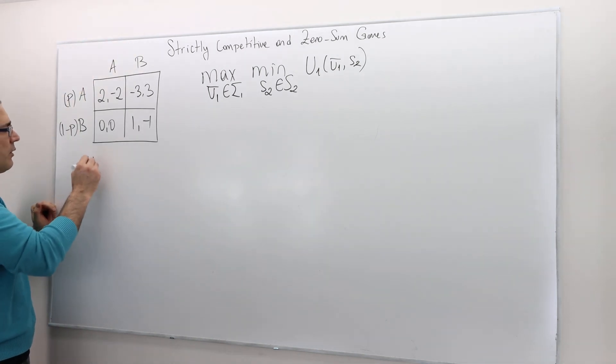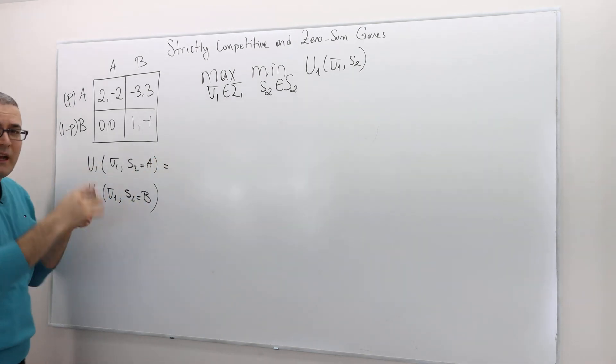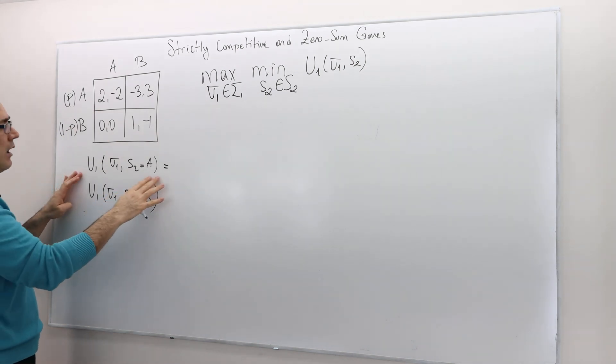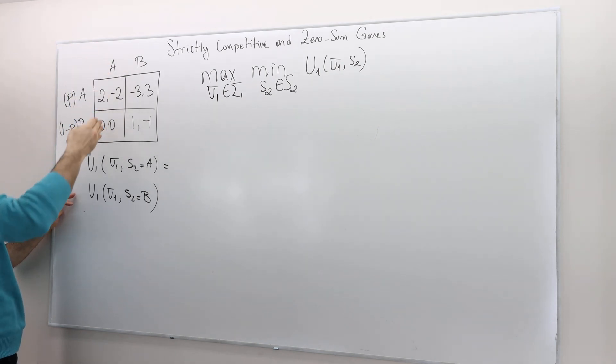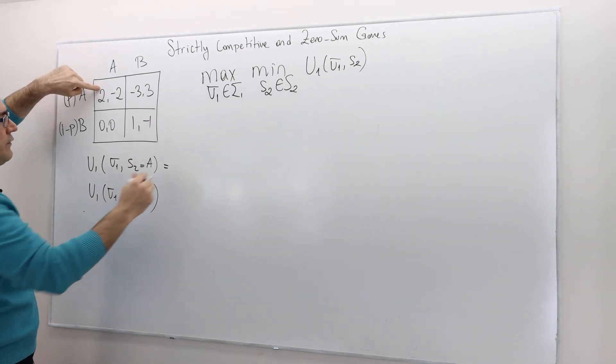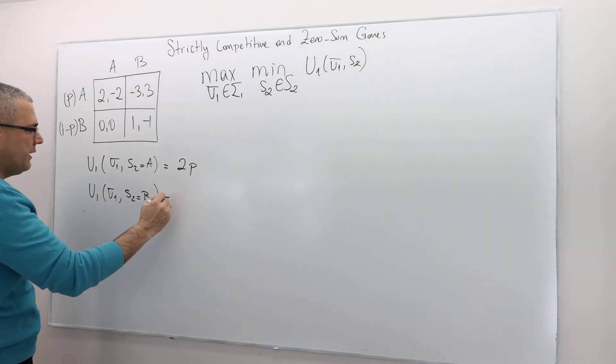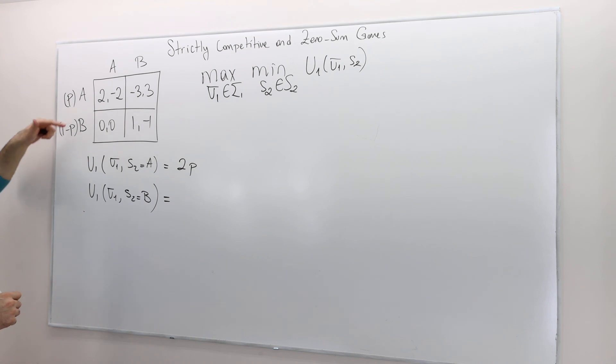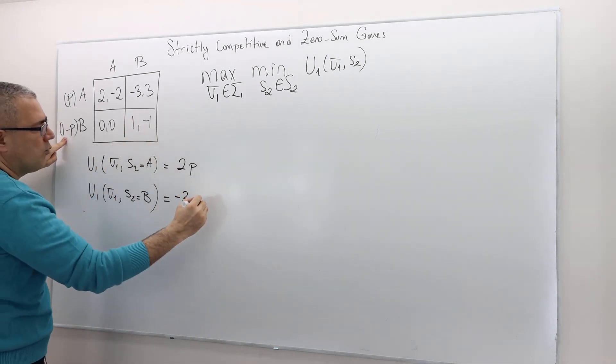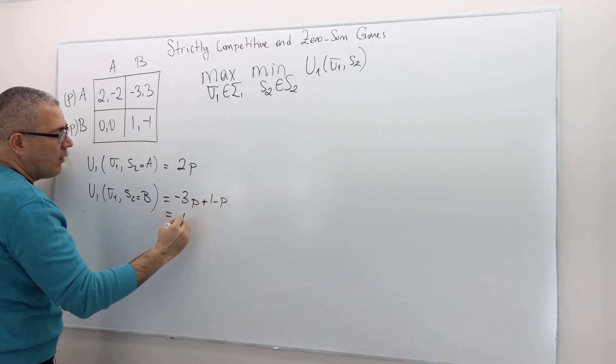So what I'm going to do is I'm going to calculate U1 sigma one s2 equals A first, and then I'm going to calculate sigma one - don't forget, sigma one is this p basically - s2 equals B. So here, given that my opponent, player two, is playing A, what is the expected payoff of player one if he plays this mixed strategy, the p? Well, he's going to get two times p plus zero times one minus p. Therefore his expected payoff is going to be 2p. And given that his opponent is playing B, his expected payoff is going to be minus three p plus one times one minus p, so one minus p. So it's basically one minus 4p.